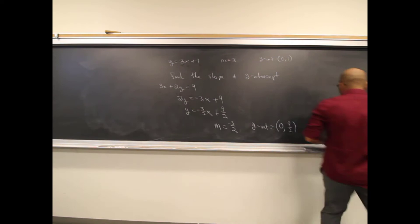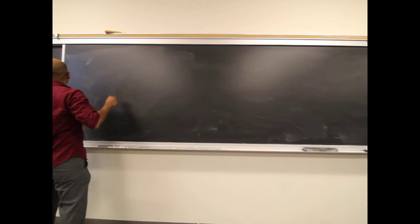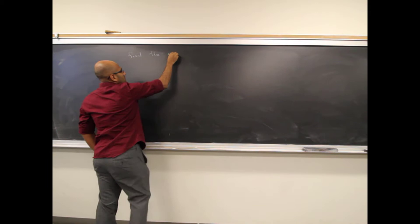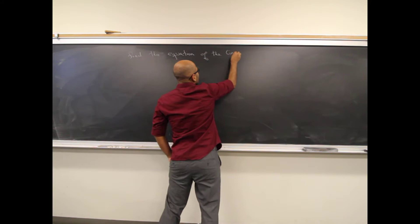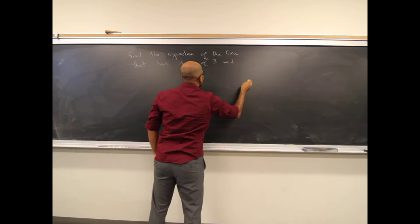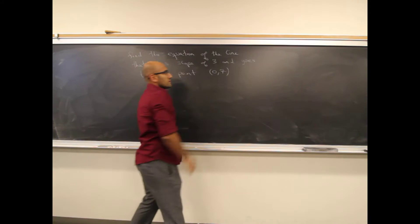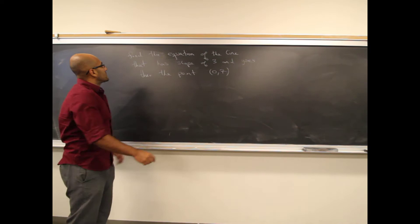The first one might be: find the equation of the line that has slope of 3 and goes through the point (0, 7). Whenever you see the words 'find the equation of the line,' you should always jump right to the formula y equals mx plus b.